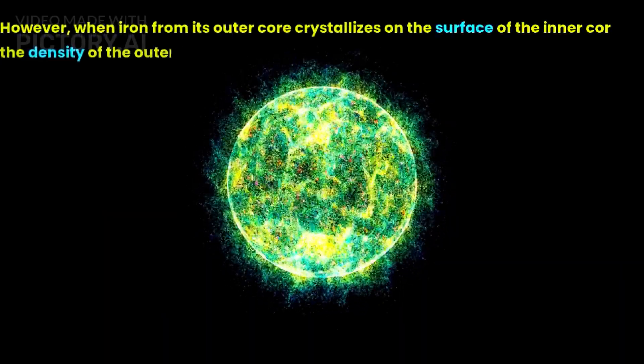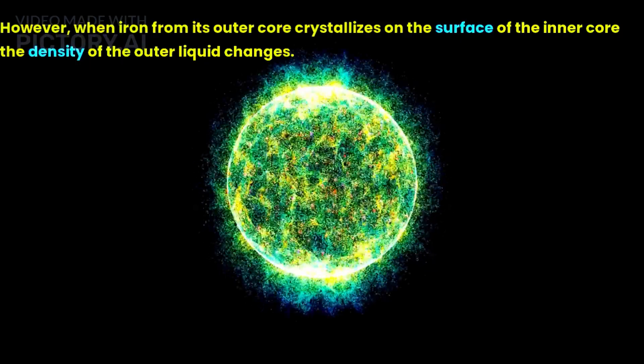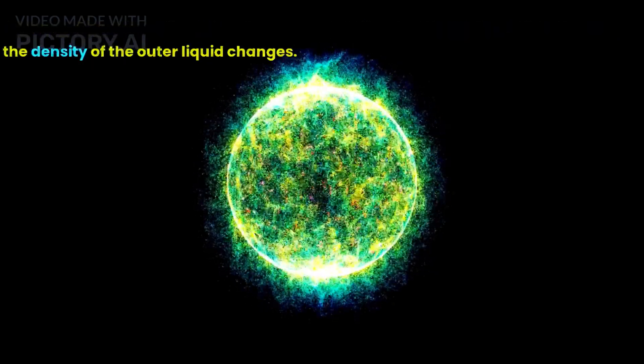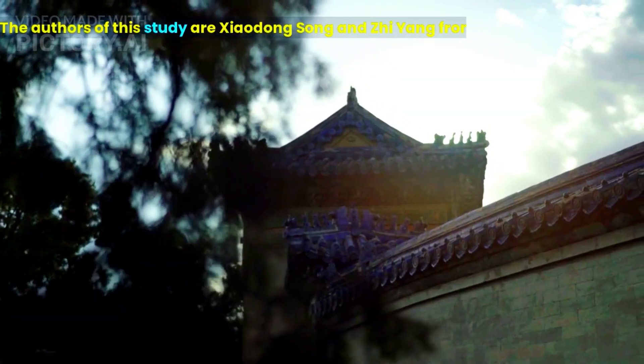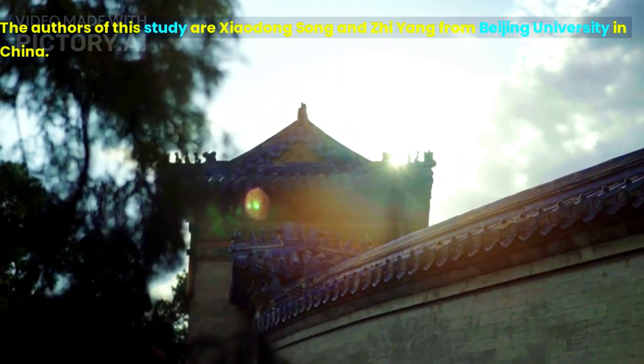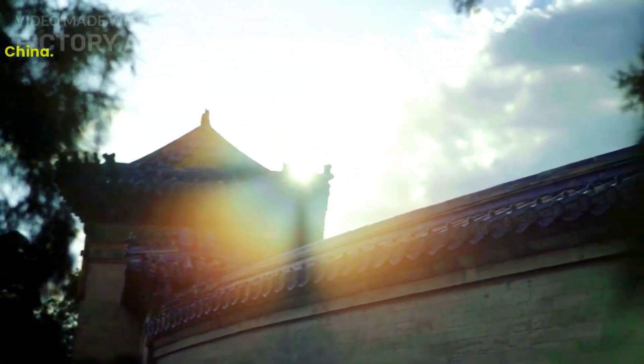However, when iron from its outer core crystallizes on the surface of the inner core the density of the outer liquid changes. The authors of this study are Xiaodong Song and Xi Yang from Beijing University in China.